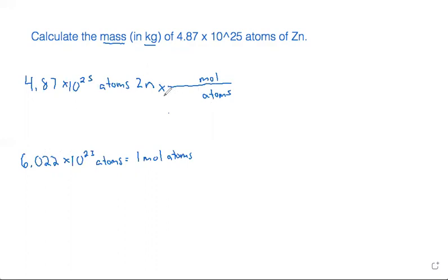And the numbers follow the units. 6.022 times 10 to the 23rd goes on bottom and one mole goes on top. So that cancels out the unit of atoms.